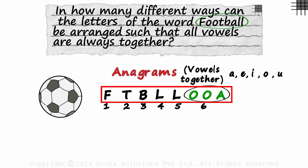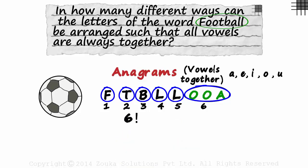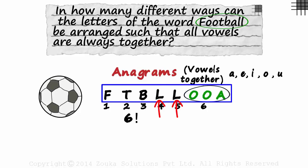First, let's look at the six elements we have: F, T, B, L, L and vowels. These six elements can be arranged in six factorial ways. And do we have a repetition in these six? Yes, the element L is repeated twice. The other elements are distinct. Don't look at the two O's now. Don't forget this is one element. So if we are looking at these six, only two are repeated. O, O, A is different from each of these five.